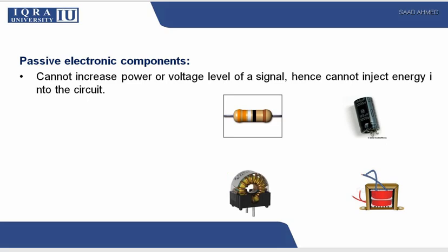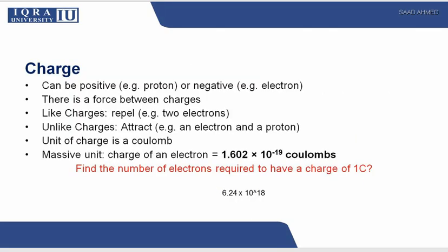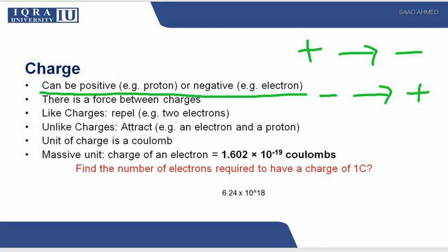Next is what is a charge. A charge can be positive or can be negative. Normally as you must have studied before, there are two theories of electron flow: the electron theory and the conventional theory. In conventional theory we know that current flows from positive to negative, and in electron theory we know it flows from negative to positive.